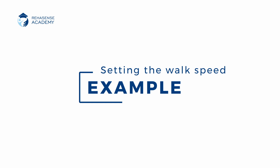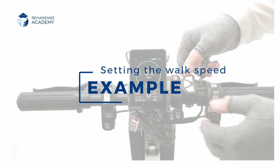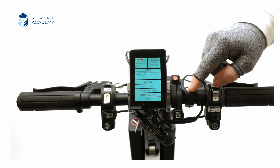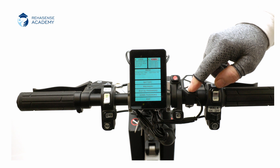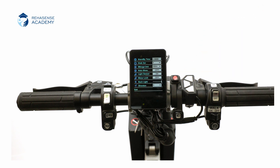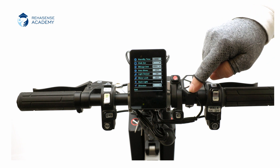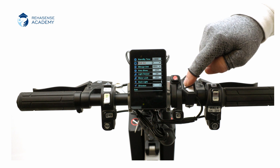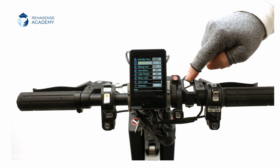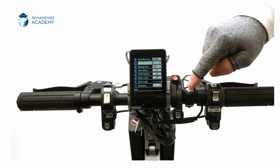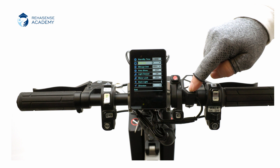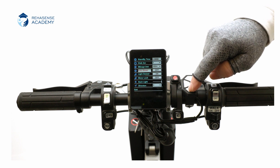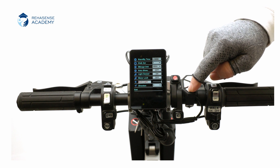This is an example of how to change the walk speed. Enter the menu in the same way as before. Press the minus button to scroll down to the menu bar and press the power button to confirm. Press the minus button again down to walk set and confirm with the power button. Use the plus and minus buttons to set the desired speed. Confirm by pressing the power button. When finished, scroll down to exit and press the power button to go back to the main page.